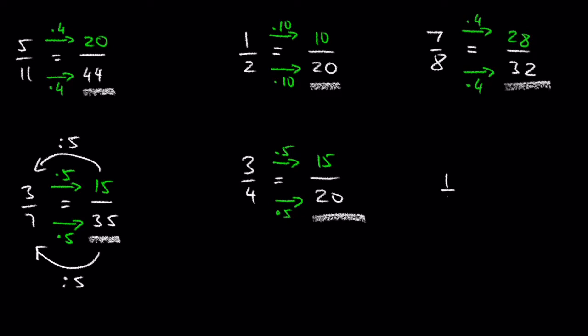1 over 3 is equal to what over 57? Feel free to pause the video and try it by yourself. 3 times 19 is 57, and 1 times 19 is 19.